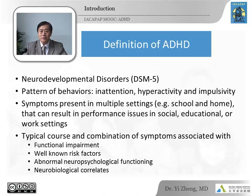As you know, ADHD is listed under Neurodevelopmental Disorders in DSM-5. It often starts in childhood with the behaviors of inattention, hyperactivity, and impulsivity, which we will go into detail later. To meet the diagnostic criteria, the symptoms of ADHD must present in at least two separate settings, for example, both at home and in school. ADHD often causes functional impairment and is associated with abnormal neuropsychological functioning and neurobiological correlates.